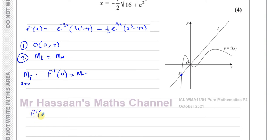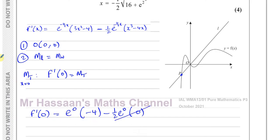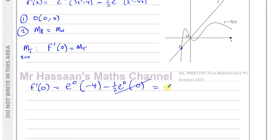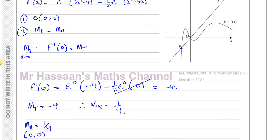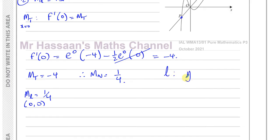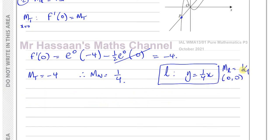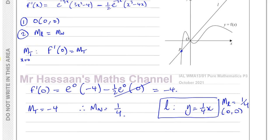So let's find f'(0). That's going to be e to the power of 0 — because minus a half times 0 is 0 — times (3 times 0 squared minus 4), minus a half times e to the power of 0 times (0 minus 0). This simplifies to 1 times negative 4, which gives negative 4. So the gradient of the tangent to the curve at the origin is negative 4. Therefore the gradient of the normal to the curve is 1 over 4. That is the gradient of line L, and since it passes through (0, 0), the equation of line L is y equals 1 quarter x.